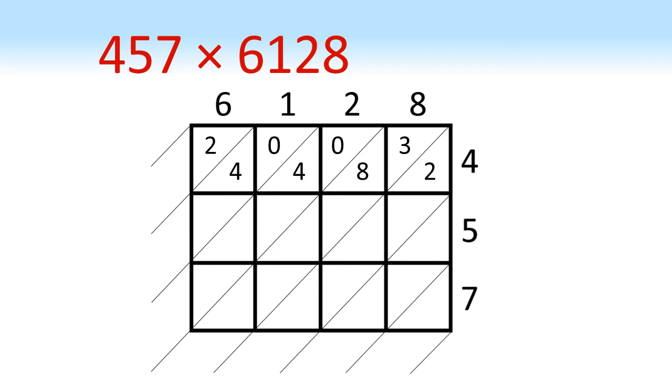In the second row, everything is multiplied by 5. So we have 30, 5, 10 and 40. Then in the bottom row, everything is multiplied by 7: 42, 7, 14 and 56.